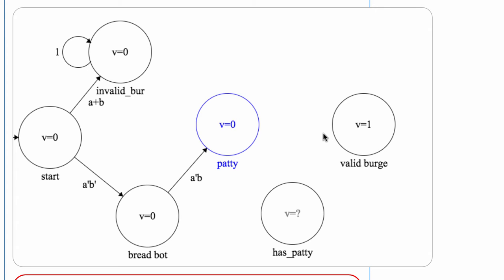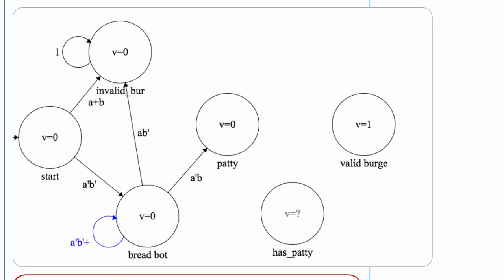The remaining task is to visit all states and specify transitions. From the start state and the invalid burger state, all transitions go back to the invalid state. At the bread state, if we get a patty (A'B), we go to the patty state. If we get cheese, we go to the invalid state since cheese can't go on top of something that's not a patty. If we get another piece of bread or lettuce, we stay in the not-yet-invalid, no-patty-yet state. Once we get a patty, another patty is also okay. If we get bread or lettuce at the patty state, that's a valid burger.